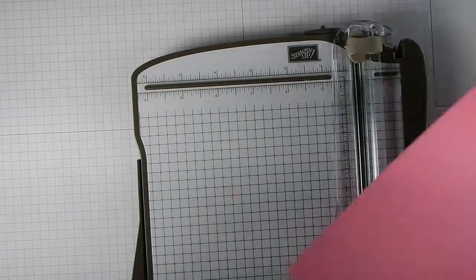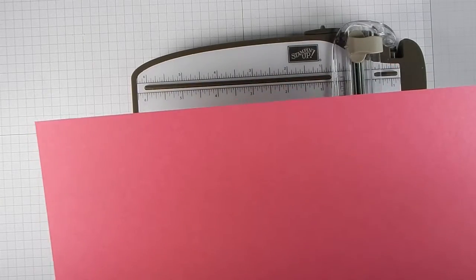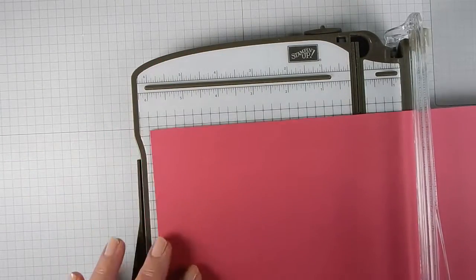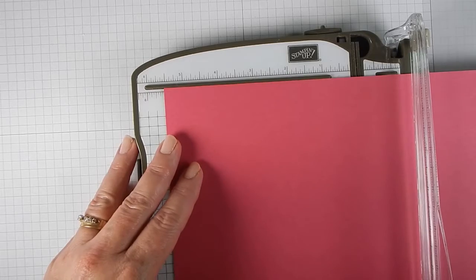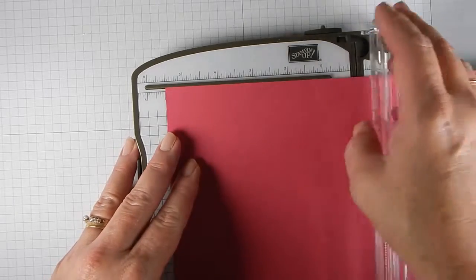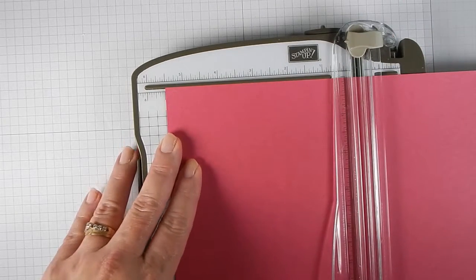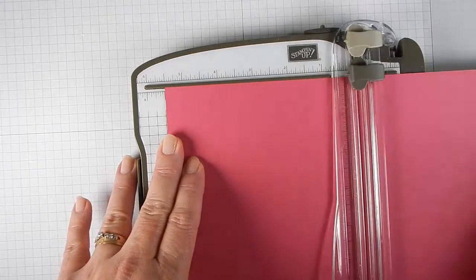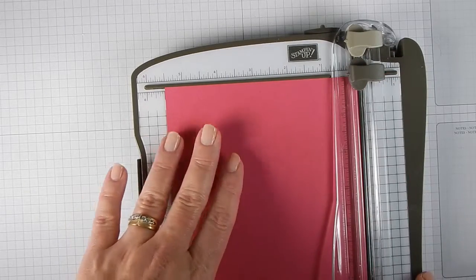You're going to take your 8 1/2 by 11 inch piece of cardstock, and you're going to lay it horizontally, put it underneath the swing arm, and put the left edge right to 5 1/2. And I like to come up from the bottom of the trimmer, just run it up, set that piece aside for later.